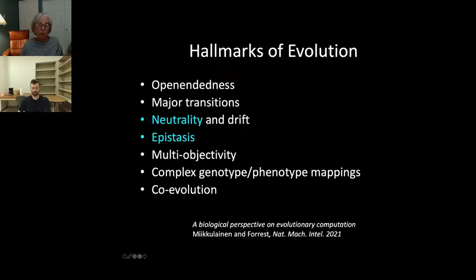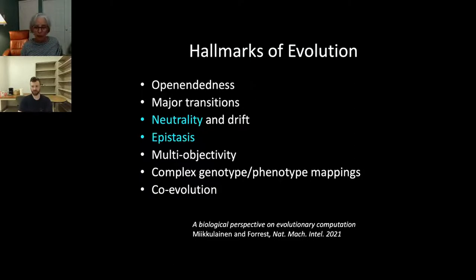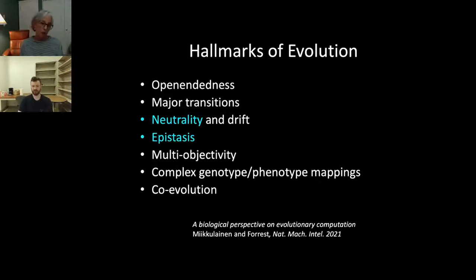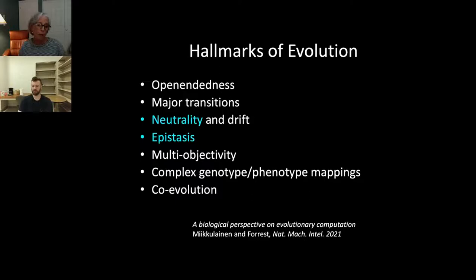These questions led me to ask what evolutionary biologists look for as hallmarks of evolved systems. I recently wrote a paper with Reesco Maculacanen asking this question with respect to evolutionary computation, identifying six or seven characteristics — hallmarks of what you'd expect in a naturally evolving system. I don't have time to go through all of them, but I'll tell you about two I've examined in my own work: neutrality and epistasis.